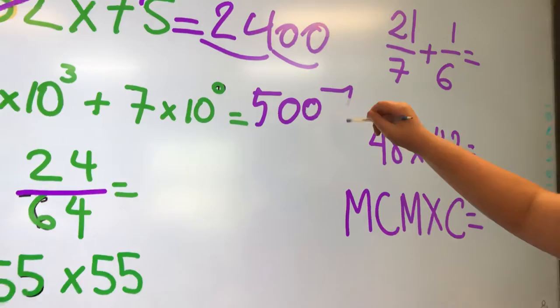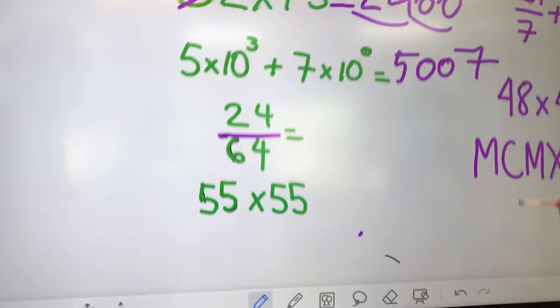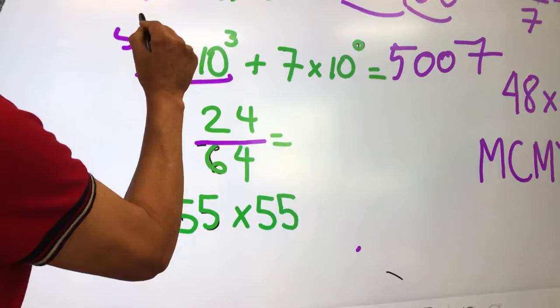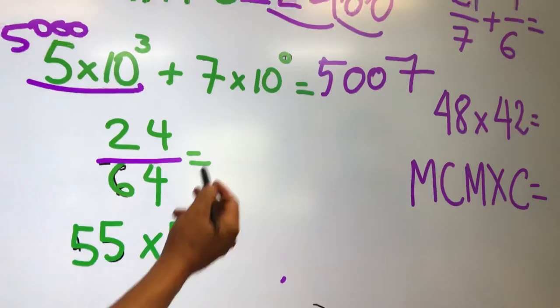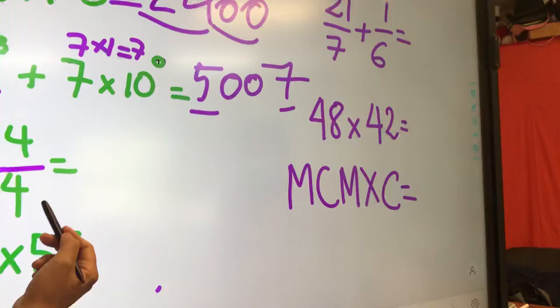5,007. Why? Because 10 to the power of 3 equals 1,000 times 5 equals 5,000. Okay, 5,000, and then? 10 to the power of 0 equals 1 times 7. 7 times 1 is 7. That is why we got 5,007.